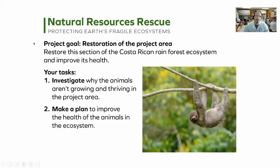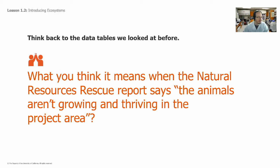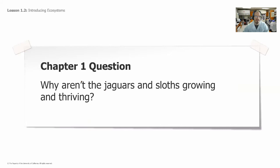Our goal is to restore that project area — restoring this section of the Costa Rican rainforest ecosystem and improving itself. We have two tasks: first, to investigate why animals aren't growing and thriving in the project area; second, to make a plan to improve the health of the animals in the ecosystem. Basically, the animals in the project area have lower weights, so they aren't growing and are probably not as healthy as animals in the normal ecosystem. Our chapter one question is: why aren't those jaguars and sloths growing and thriving?